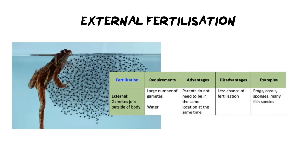External fertilization is when gametes — the egg cells and the sperm cells — join outside of the body. There are often a large number of gametes and it occurs in water. In terms of advantages, the parents don't need to be in the same location: a male can simply swim past, find the eggs, and fertilize them, which means it requires very little energy to find a mate. The disadvantage however is the chance of fertilization — she can lay all these eggs and if nobody swims past they'll never get fertilized. On the positive side, these eggs are very simple, like a gelatinous ball — they don't require a lot of energy, which is why she can make so many of them.